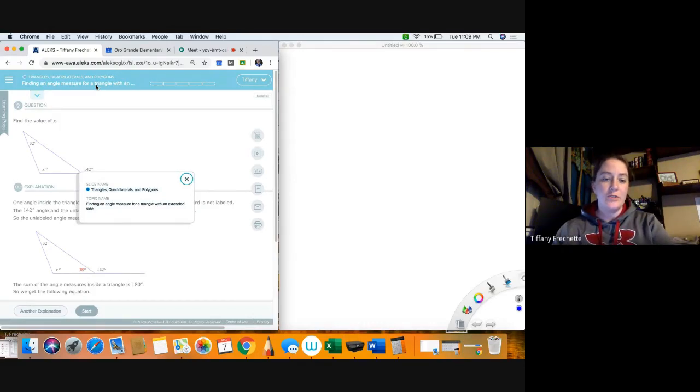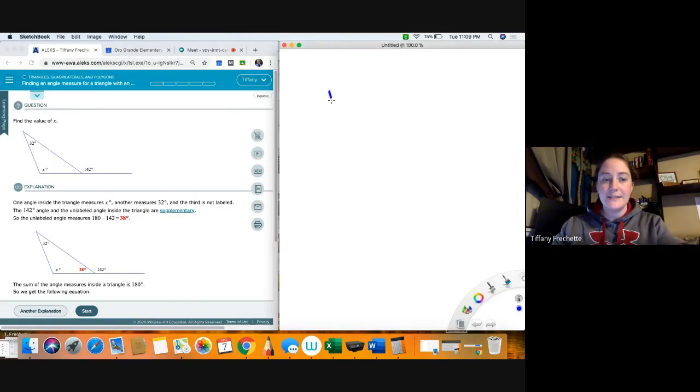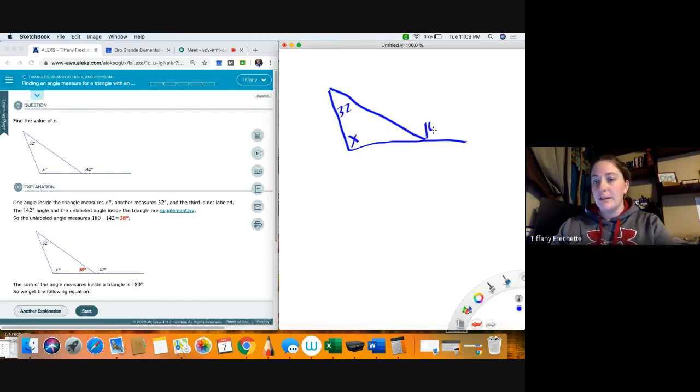Finding an angle measure for a triangle with an extended side. Alright, so on this one we need to find the value of X. Okay, so I'm gonna redraw this really crude. We don't really need to redraw them each time, I just wanted to redraw it so I can kind of mess with the drawing over here.